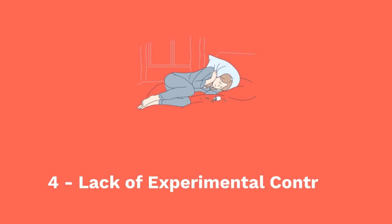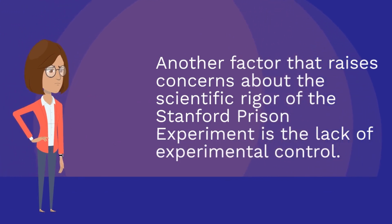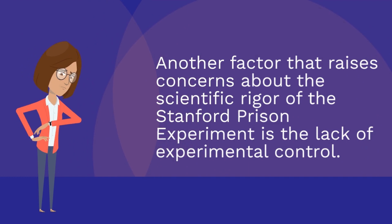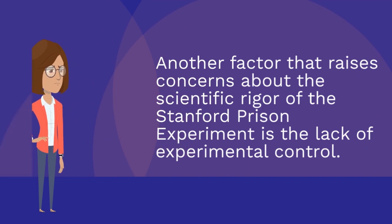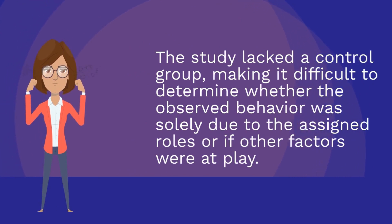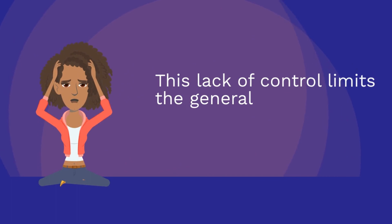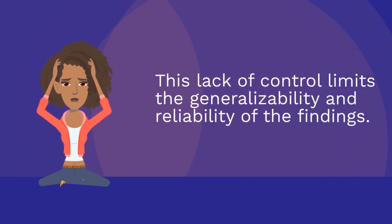Lack of experimental control. Another factor that raises concerns about the scientific rigour of the Stanford Prison Experiment is the lack of experimental control. The study lacked a control group, making it difficult to determine whether the observed behaviour was solely due to the assigned roles or if other factors were at play. This lack of control limits the generalisability and reliability of the findings.